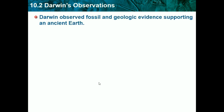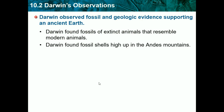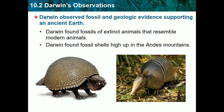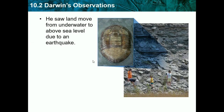Darwin observed fossil and geological evidence supporting an ancient Earth. Darwin found fossils of extinct animals that resembled modern animals, which proves evolution, because if old fossils resemble modern animals today, they must have come from that animal — they evolved. Darwin also found fossil shells high up in the Andes Mountains. Scientists sometimes find fish fossils at the tops of mountains, which means there was water at that point, showing how the Earth changed. He saw land move from underwater to above sea level due to an earthquake, which explains why fish fossils can be found high in the mountains.